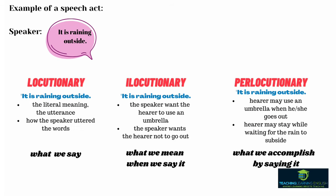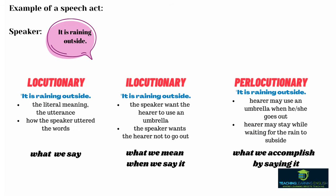Let's summarize the example: it is raining outside. These are the types of speech act. Perlocutionary — it is raining outside, the literal meaning, the utterance is clearly uttered. Elocutionary — the speaker wants the hearer to use an umbrella, or the speaker wants the hearer not to go out.